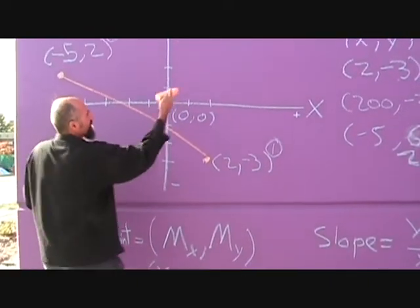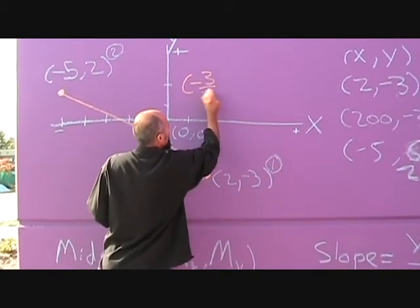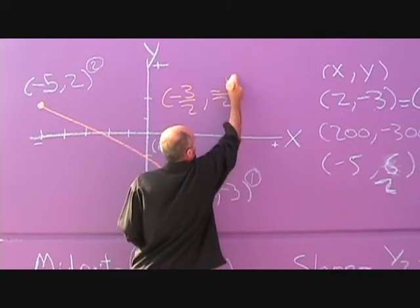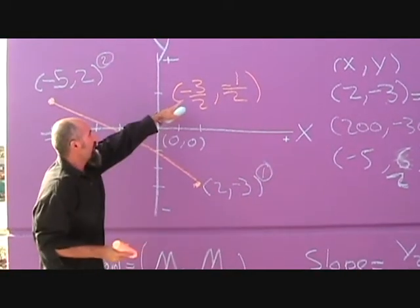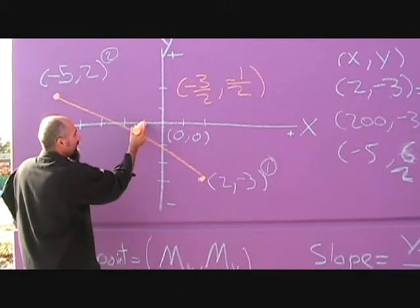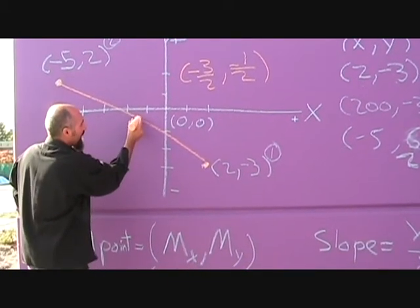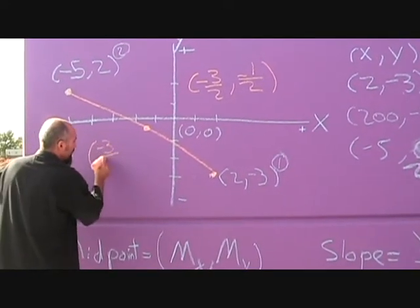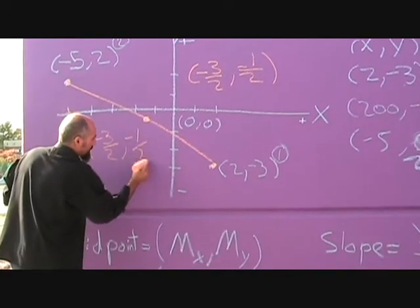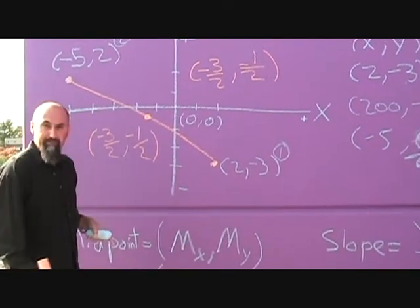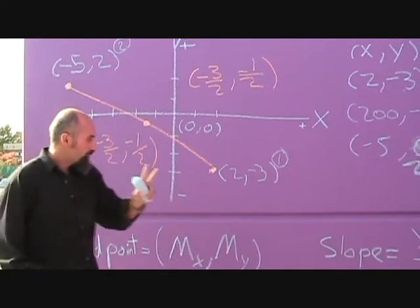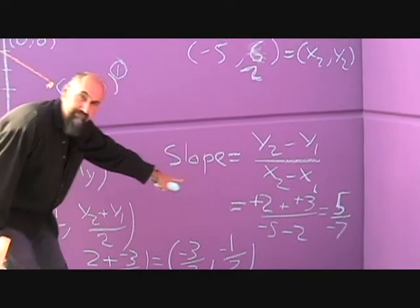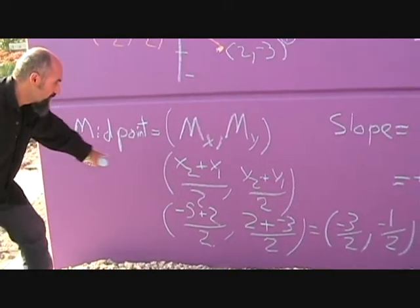The midpoint for this line is going to be negative 3 over 2 and negative 1.5. Negative 3 over 2 is negative 1.5, so we go 1 and a half over and negative 1 and a half we go half down. So we just found the midpoint of a line. Easy. Two things: the slope, super important, and then you have the midpoint which is just the average between the x's and the y's.